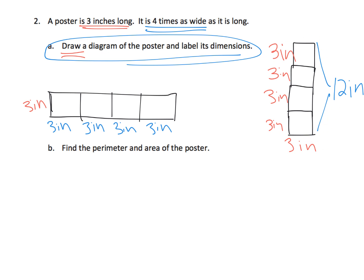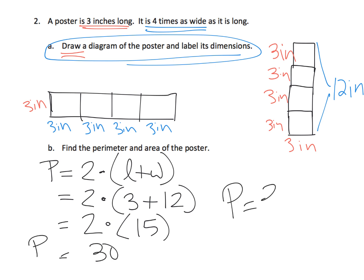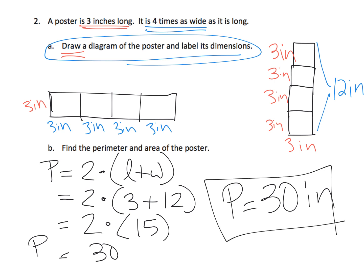Find the perimeter: the perimeter is two times length plus width. So that means it's going to be two times three plus twelve. Teachers, if your students aren't sure where this is coming from, make sure you pause the video and help students figure that out. Two times three plus twelve is two times fifteen, which is thirty. So the perimeter is equal to thirty inches. That means the distance around this poster is thirty inches.